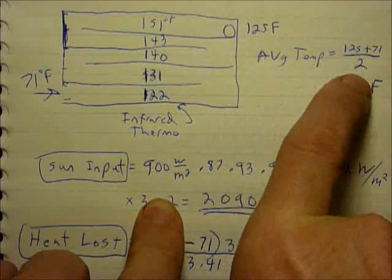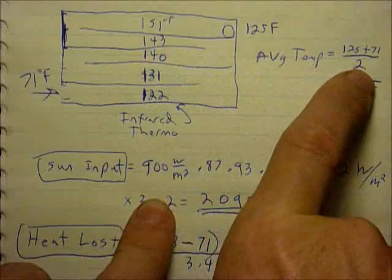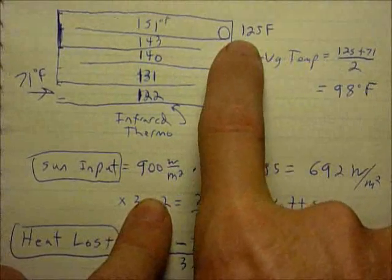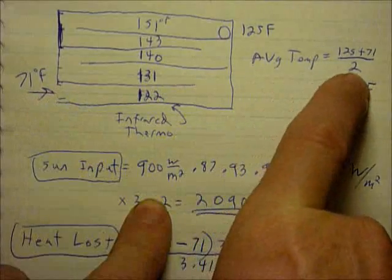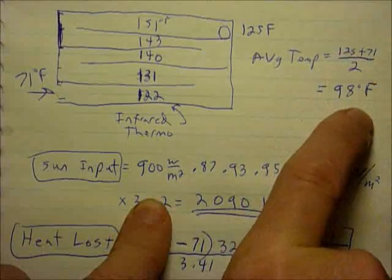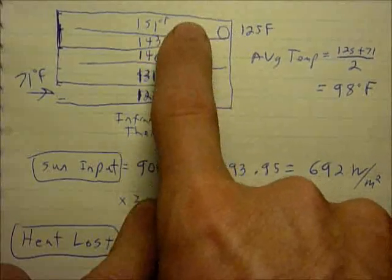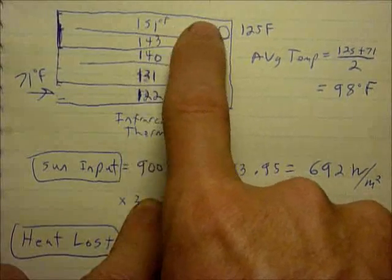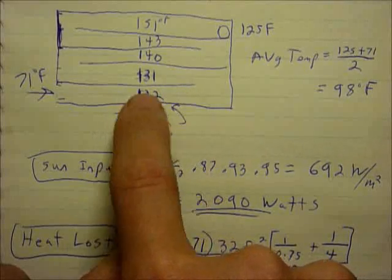To do some of the calculations I'll need an average temp for the box which is approximately the output temperature plus the input temperature divided by two. This is halfway between those two numbers so 98 would be the center. A higher temp here would have more heat losses and a lower temp would have fewer heat losses.